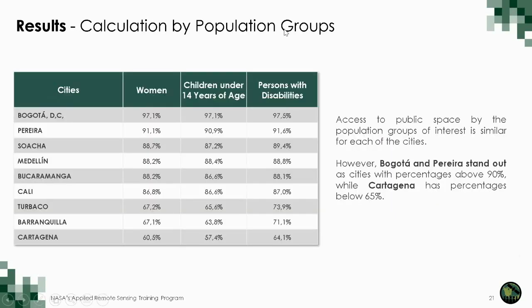As a result of the service area calculation, in general the access to public space by population groups of interest is similar for each of the cities. However, Bogotá and Pereira stand out as cities with percentages of about 90 percent, while Cartagena has a percentage below 65 percent. The accessibility between groups — women, children, and persons with disabilities — is similar, though Bogotá and Pereira have higher accessibility values.